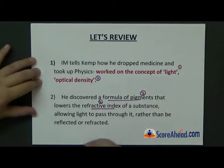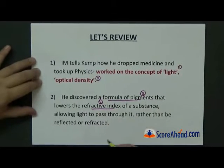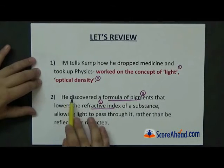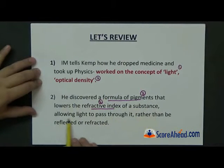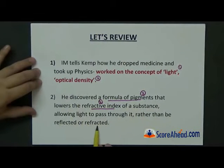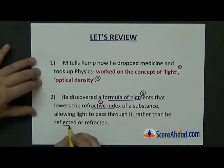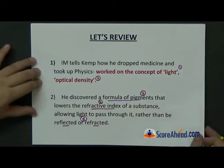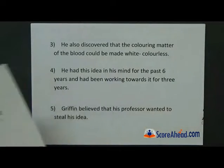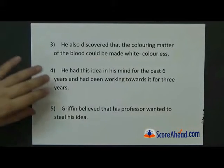We need to use some words in our answers — concepts like pigments, the formula of pigments, and refractive index. These words must be used in your answers so that your answers become strong and you gain good marks. He discovered a formula of pigments that lowers the refractive index of a substance, allowing light to pass through it rather than be reflected or refracted. Words like reflected and refracted can also be used.